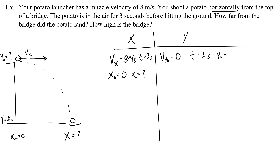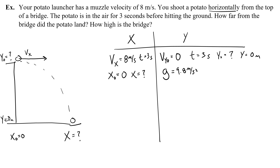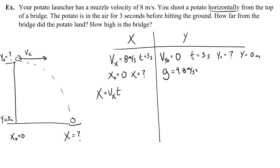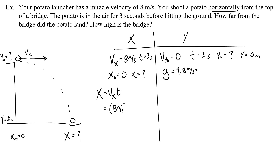In the y column, acceleration due to gravity is 9.8 m/s². We don't need any information from x to solve y or vice versa since we already know t = 3 seconds in both. For x: x = vx × t = 8 meters per second × 3 seconds = 24 meters. That's how far from the bridge the potato lands.